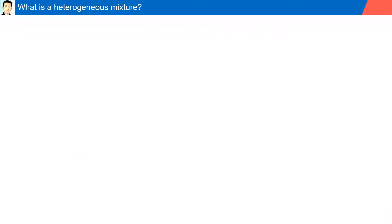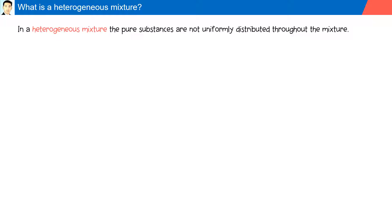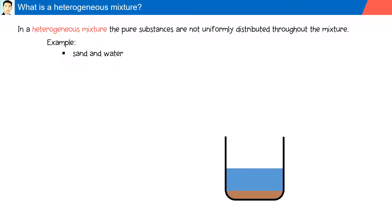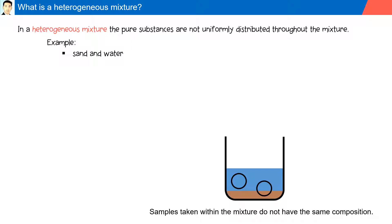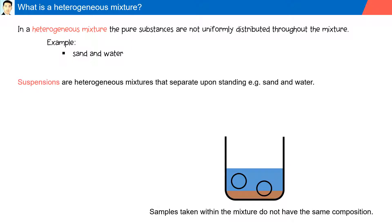What is a heterogeneous mixture? In a heterogeneous mixture, the pure substances are not uniformly distributed throughout the mixture. For example, sand and water. Samples taken within the mixture do not have the same composition. Suspensions are heterogeneous mixtures that separate upon standing — for example, sand and water. The particles are large enough to be separated by filtration.